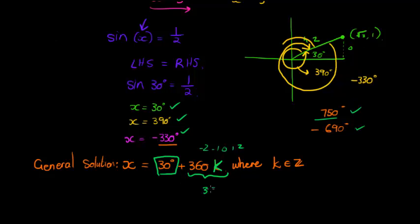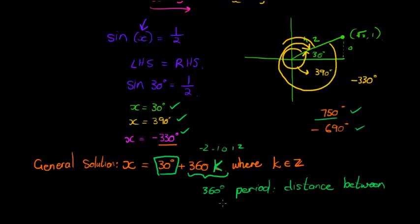This 360 that we add is called the period — the distance between corresponding solutions. So 390 corresponds to the angle 330, and when we get to the graphs later you'll also see where this fits into those graphs as well.